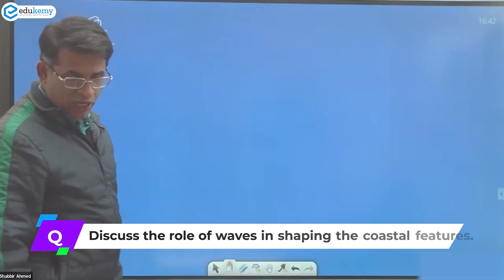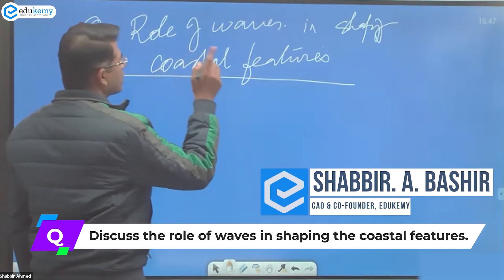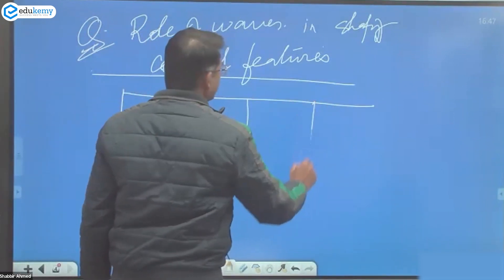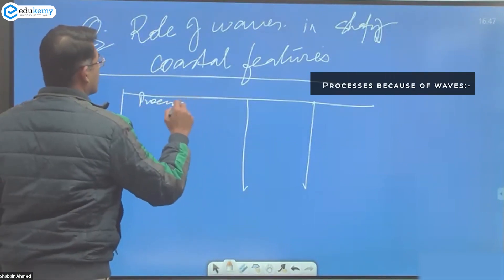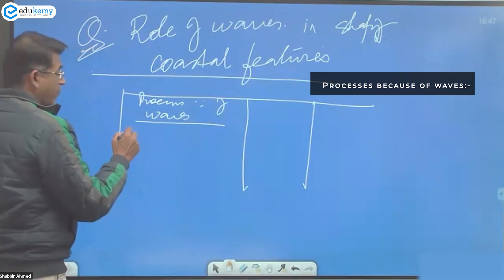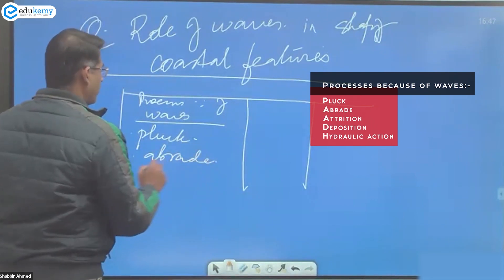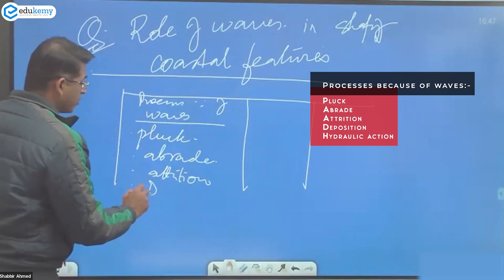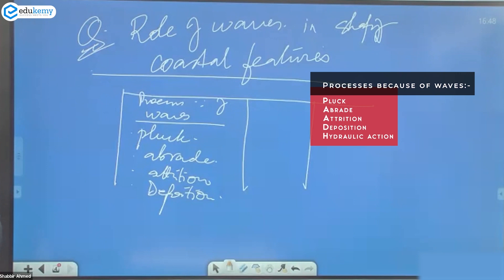We'll discuss the role of waves in shaping coastal features. There are three things you have to know for this answer - make your notes first. What are the processes? Because of waves, what can waves do? Waves can pluck, waves can abrade, waves can cause attrition, and waves are responsible for deposition.